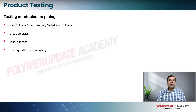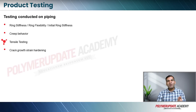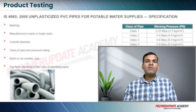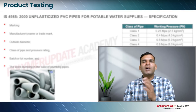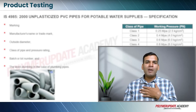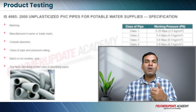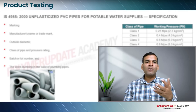Let us look at some of the properties such as ring stiffness, ring flexibility, and initial ring stiffness. Then we will look at creep behavior and time-dependent deformation behavior. Then we will look at tensile testing of pipes, which has to be different from the tensile testing we have already done. Lastly we will look at crack growth and strain hardening. These are the various standards we are going to look at, and there are sub-standards present within one standard.